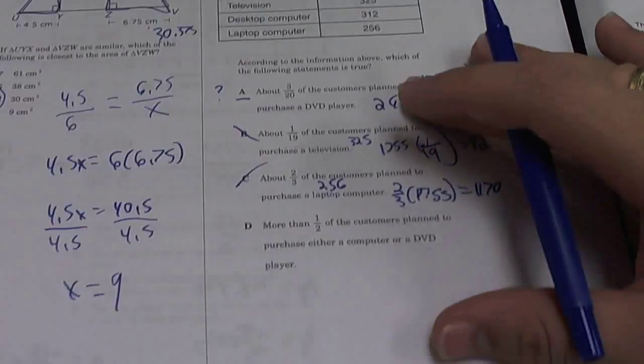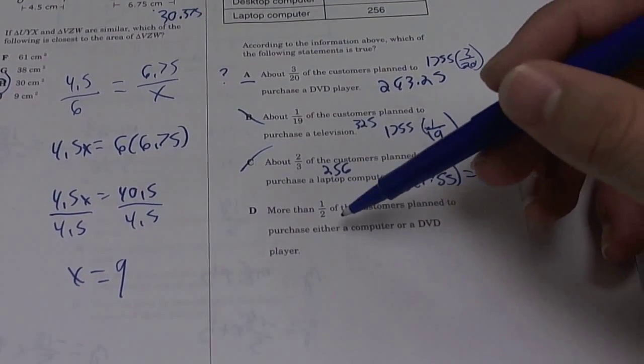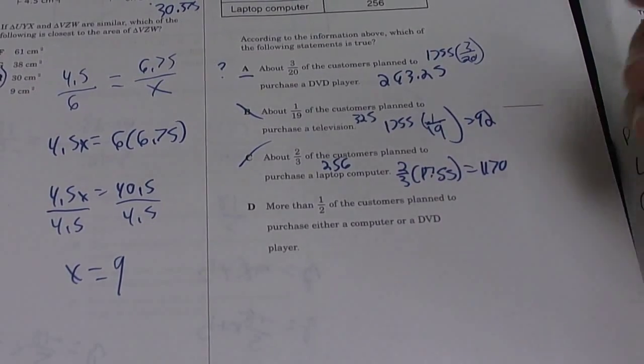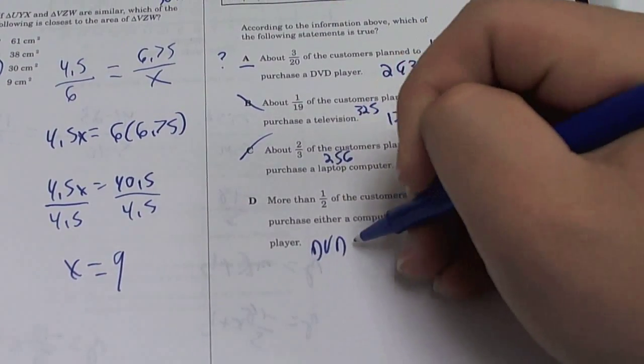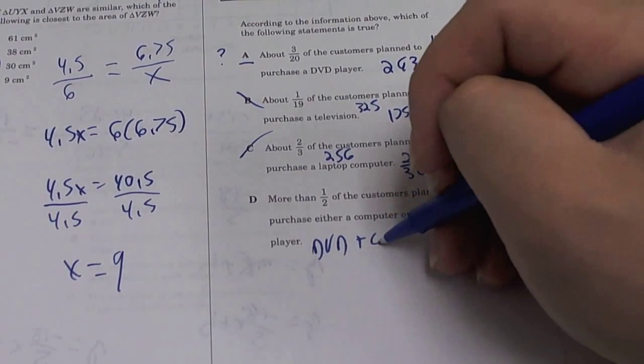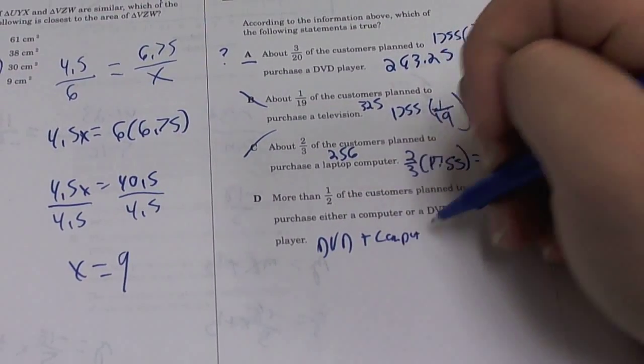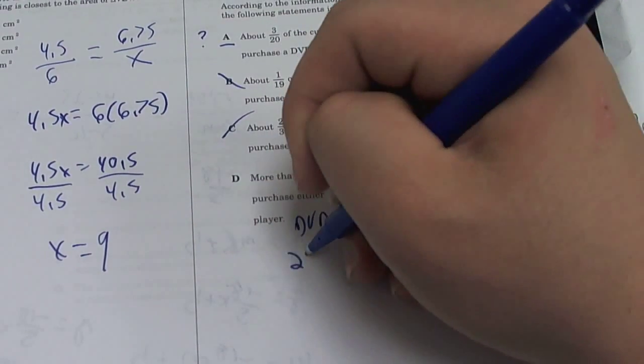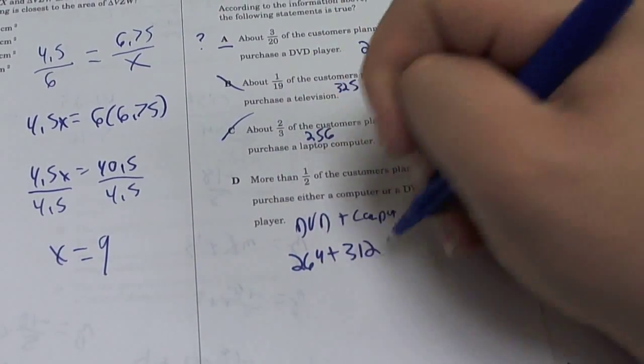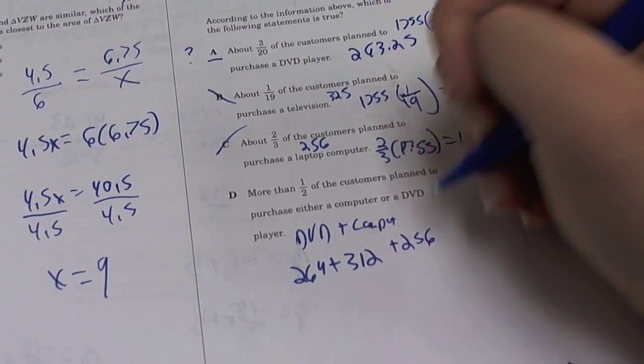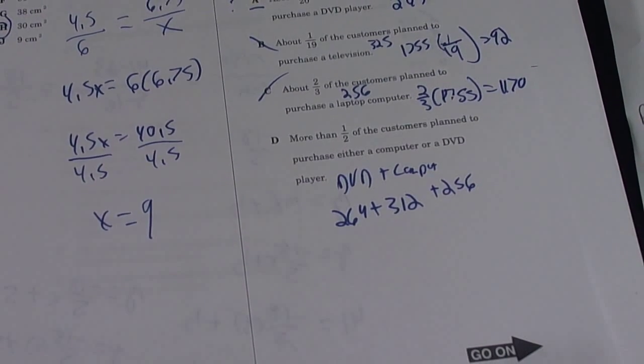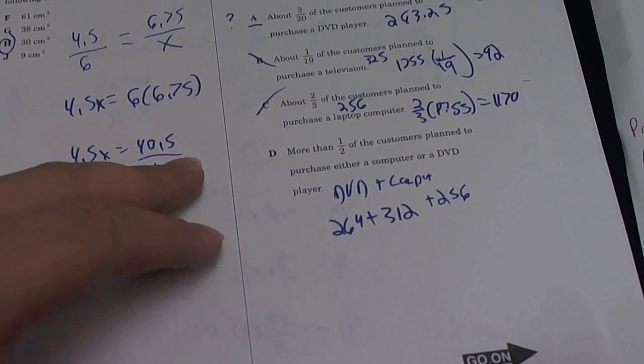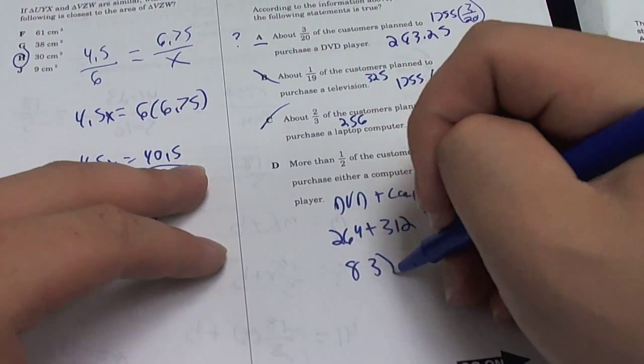More than half of the customers plan to purchase either a computer or a DVD player. This is a little bit tricky - it's either computer or DVD player, so that means you got to add both. So you add DVD player plus computer. So you do DVD player, which is 264, plus 312, plus 256. So you add all three of those together, you get 832.